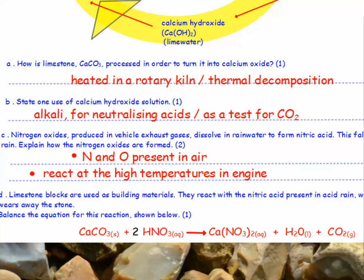Part A: how is limestone processed in order to turn it into calcium oxide? It's heated in a rotary kiln — or you could have said it's thermally decomposed. Part B: state one use of calcium hydroxide solution. It's used as an alkali for neutralising acids, or it's used as a test for CO2.